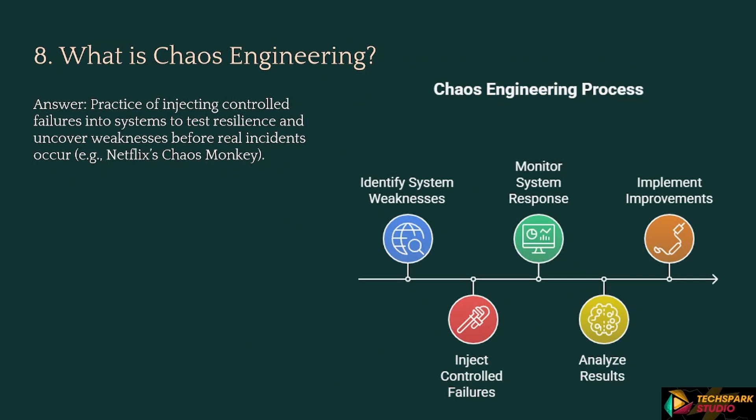Moving on: What is chaos engineering? Response: It is the practice of injecting controlled failures into systems to test resilience and uncover weaknesses before real incidents occur. Example: Netflix Chaos Monkey.